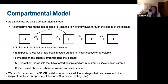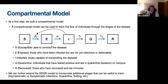We start by building a compartmental model. Compartmental models are used to track the flow of individuals through different stages of the disease. This example is an SEIQR model. We start with S — susceptible individuals that are able to contract the disease. At some probability they'll come into contact with infected individuals and potentially move into the E compartment, or exposed — individuals who have been infected but are not yet infectious or detectable. They are not going to be able to spread the disease to anyone else and they won't test positive yet.